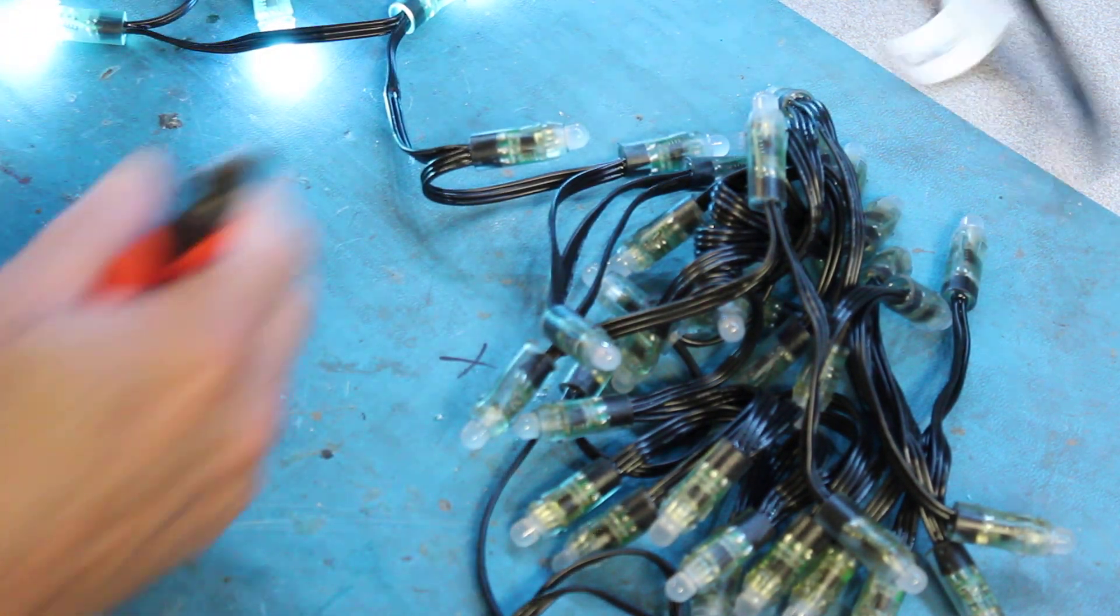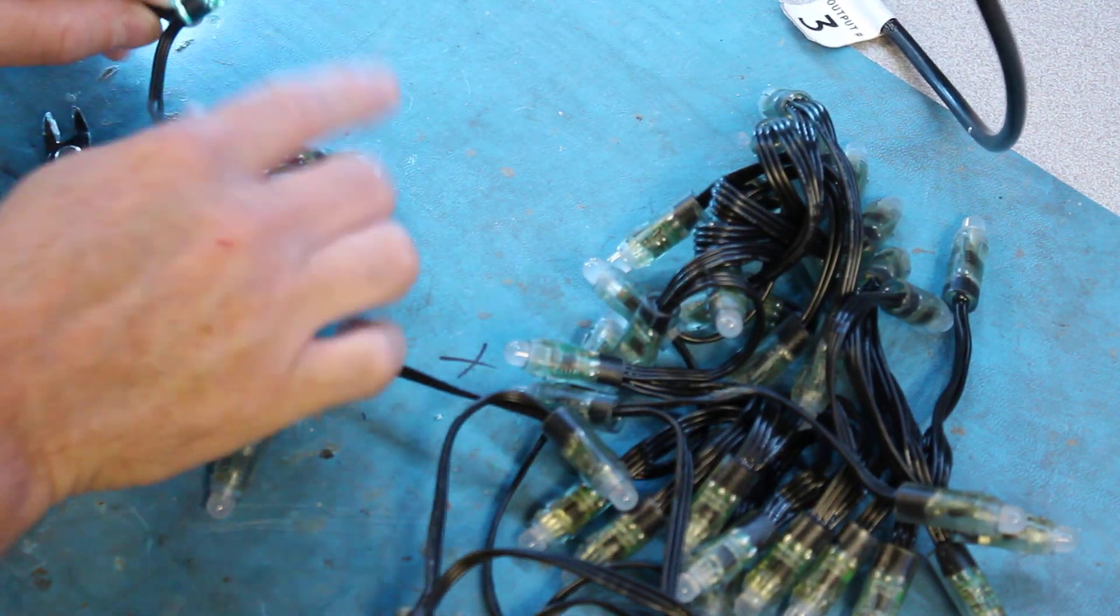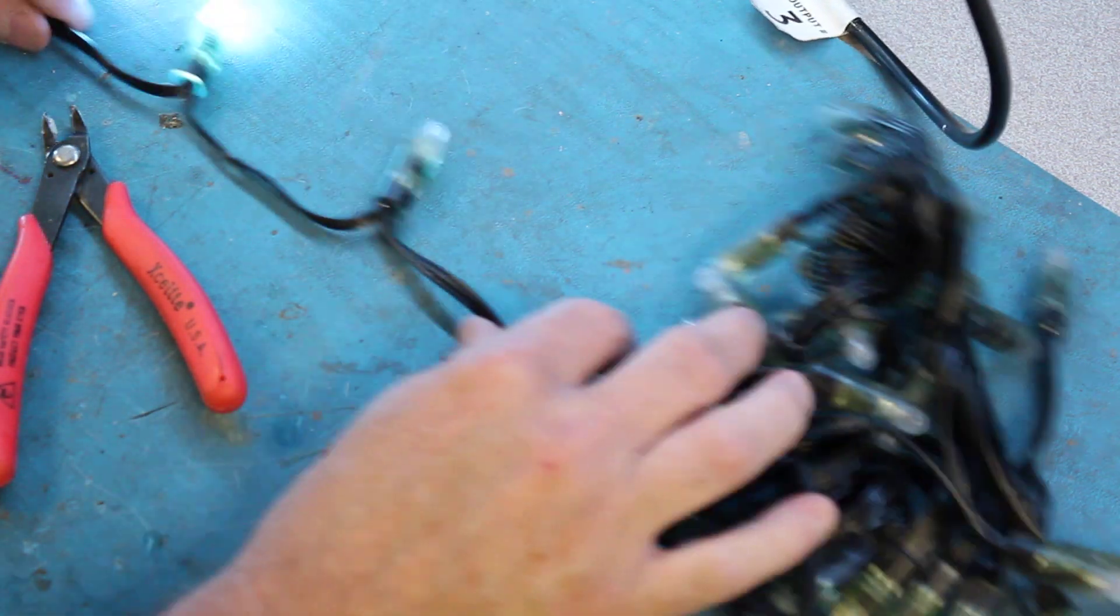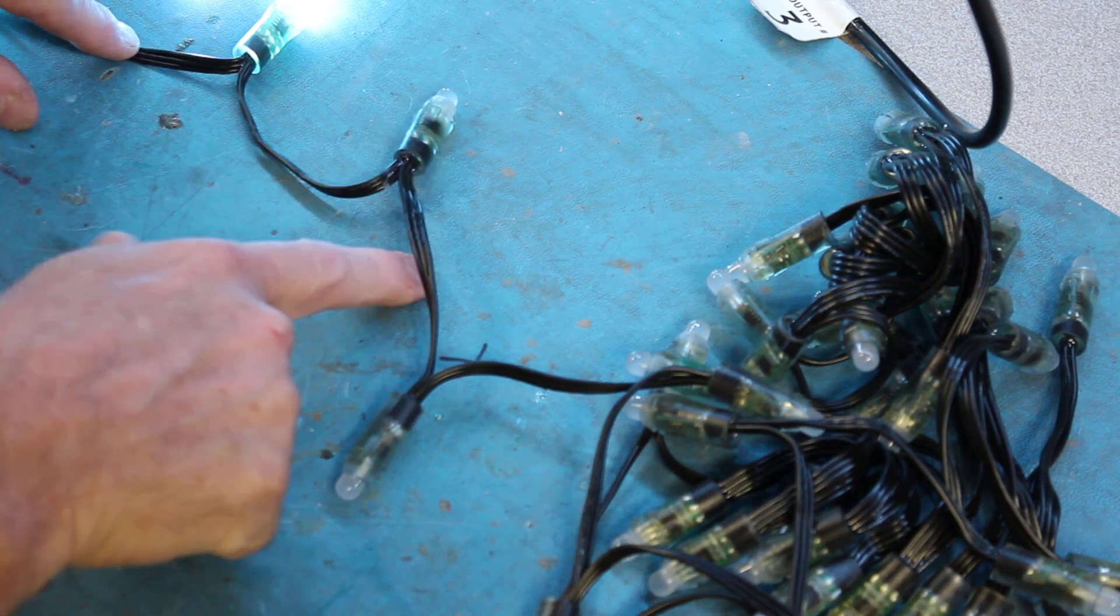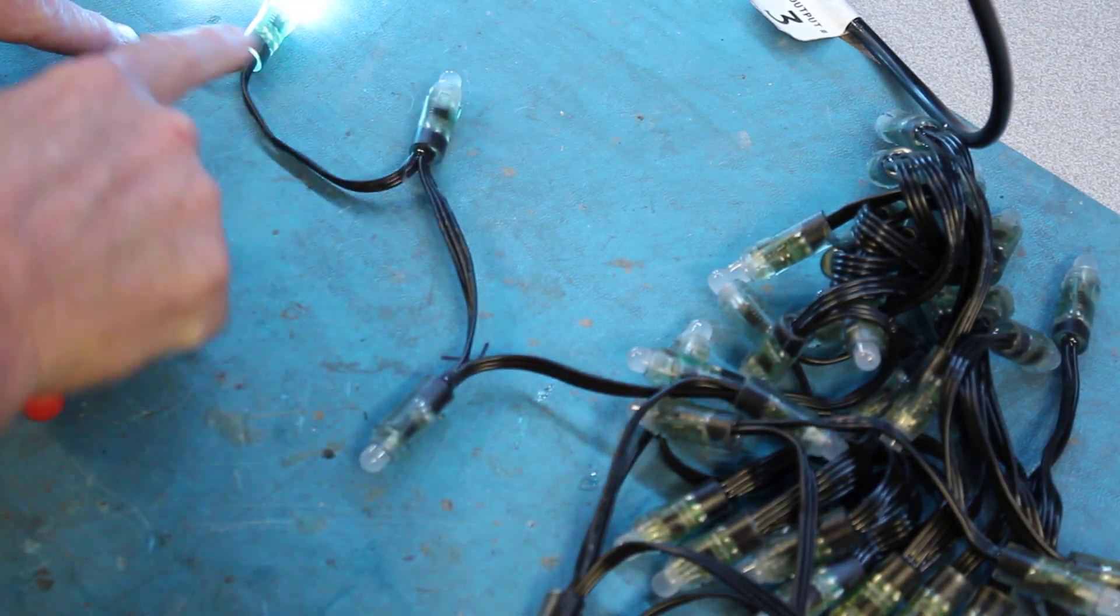Now, what we're going to do is go ahead and note where our break is. So this pixel is working, this pixel is not working, and then so on. Where we're actually going to cut is before the pixel that works, and after the first pixel that does not work. So we're going to be cutting out two.